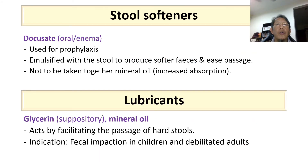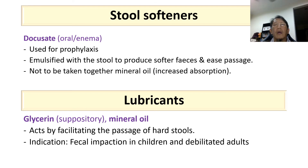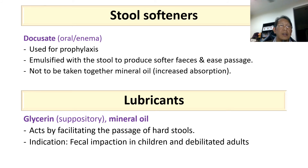For stool softeners, the example drug is docusate. It is a surface-active agent that becomes emulsified with the stool to produce softer feces and easier passage. It should not be given together with mineral oil because it will increase the absorption of mineral oil. Docusate is normally used as prophylaxis and not for treatment because it takes a long time to produce effects.